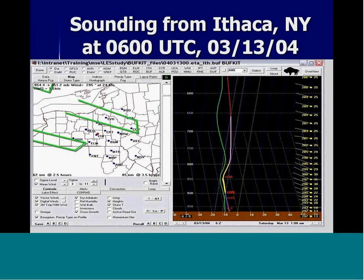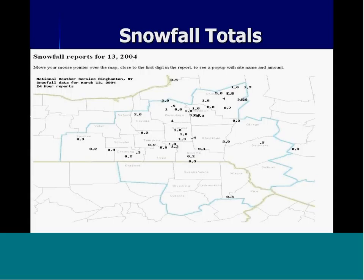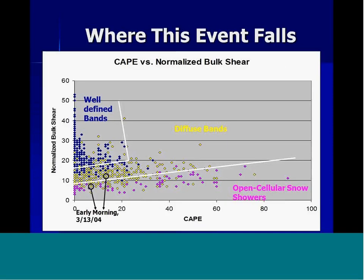A sounding from Ithaca, New York at 6Z showed that winds were not that strong in the lowest kilometer — fairly weak shear in the mixed layer, which ended up being a key factor. The snowfall totals were underwhelming: mostly one to three inches, even less than one inch in spots. We barely squeaked out an advisory in northern Oneida County, with amounts quite underwhelming compared to the forecast.